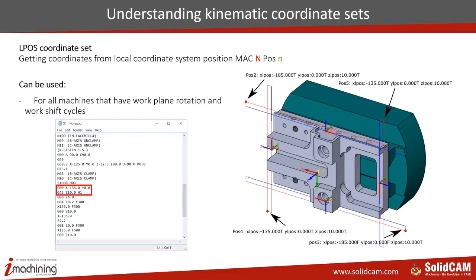The L-Pose set is the second easy coordinate set. Comparing with H-Pose, which always comes from MAC position 1, L-Pose is a prefix for 'local' — you get coordinates from the local coordinate system. So it can be MAC1 position 2, 3, 4, and so on. Here on the right side I have a nice example of cleaning surfaces with a face mill. For each rotation and each coordinate system, we get a starting point. Taking position 4 as an example, the L-Pose X would be minus 135 and L-Pose Y is 0.